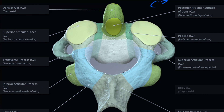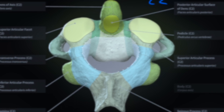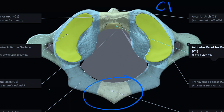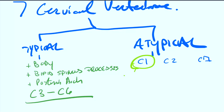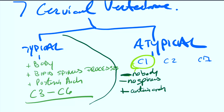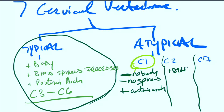To show you the difference: here was C2 and here was C1. C2 is unique — it has this structure called the dens, and it also does have a spinous process. C1 does not have a spinous process. So the key differences for C1 compared to typical vertebrae are: it has no body, no spinous process, and it has an anterior arch. The only difference with C2 is it has a dens — otherwise everything else is like a typical vertebra. The only difference with C7 is it has a prominent spinous process and it is not bifid.